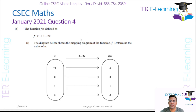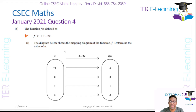In this question we have a function defined as 3 minus 2x. The diagram shows the mapping diagram for the function f. We need to determine the value of e.